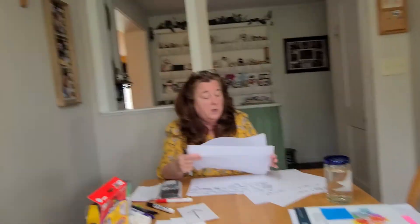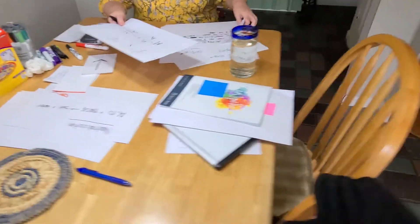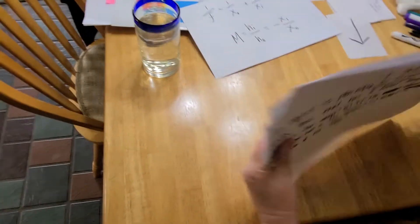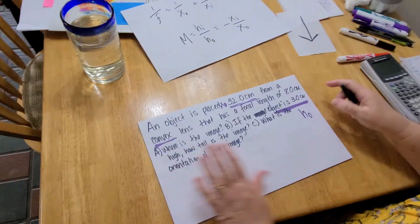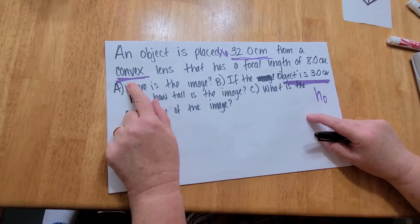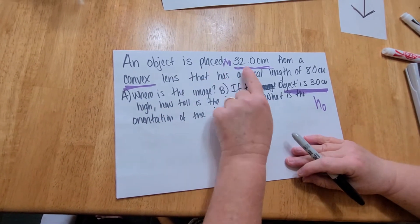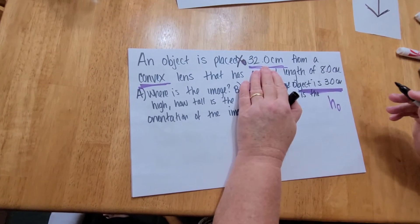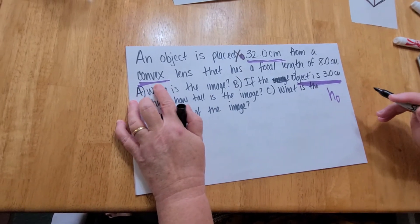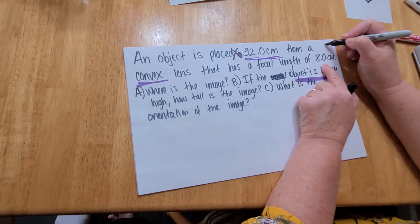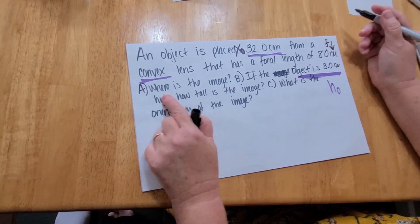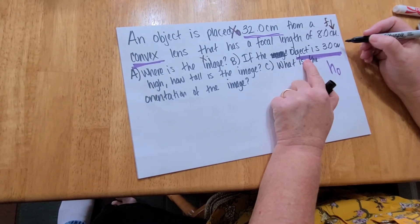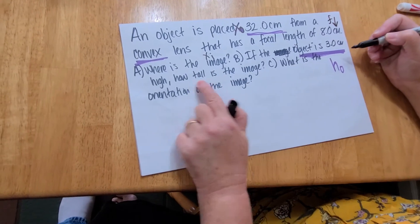I've made up one sample problem where we're going to find out everything. An object is placed 32 centimeters from a convex lens. The things in purple are the important things. So the object is placed 32 centimeters, that's XO. The convex lens tells us that this focal length is going to be positive, and we want to know where's the image, that's XI. And they're telling us that the object is three centimeters high, that's the height of the object. They want to know how tall is the image, that's HI.